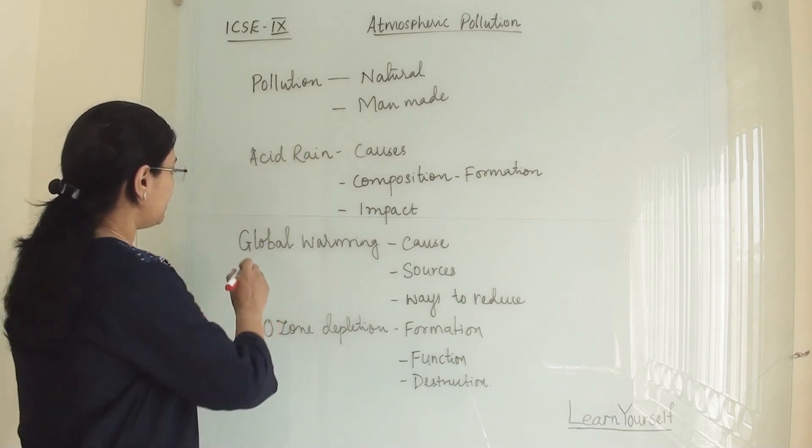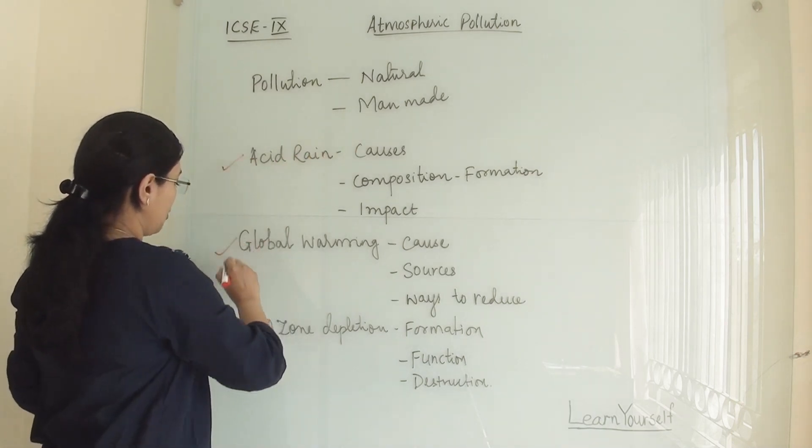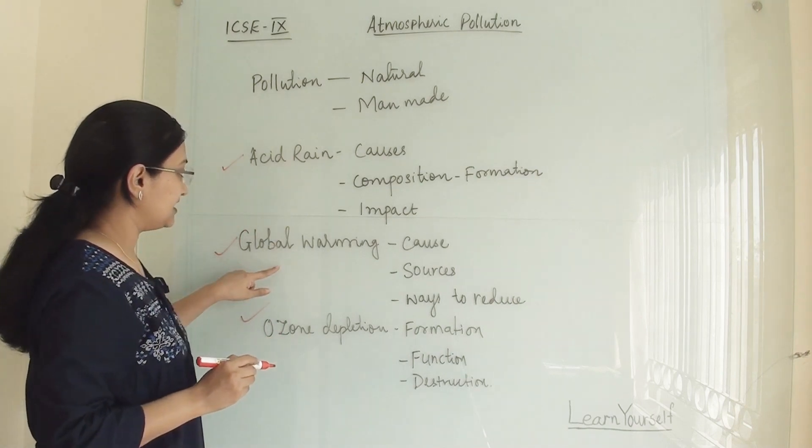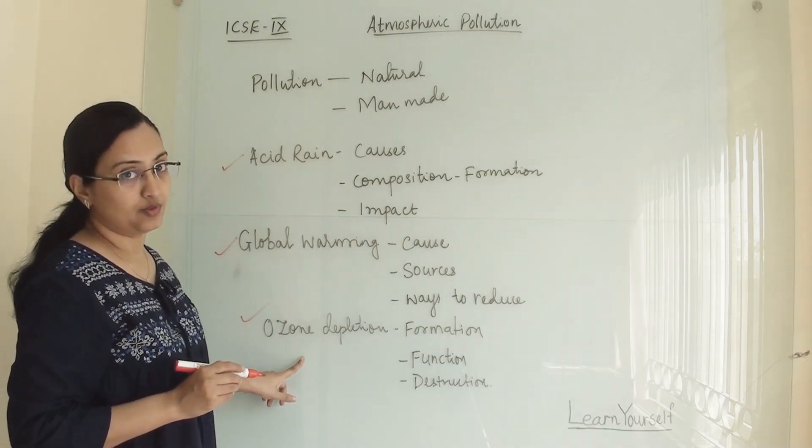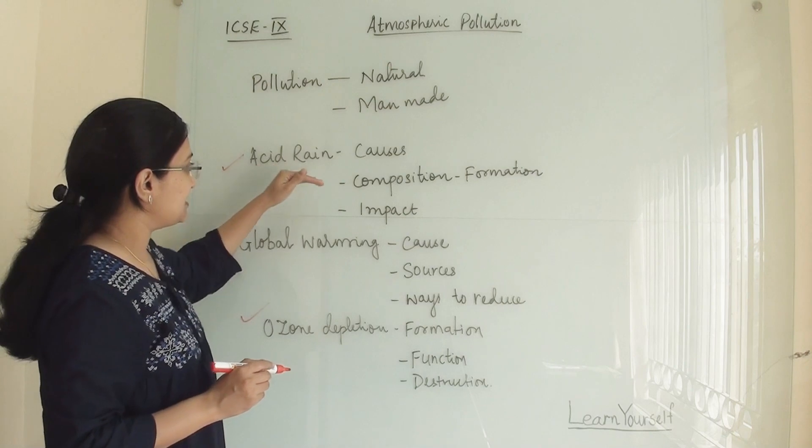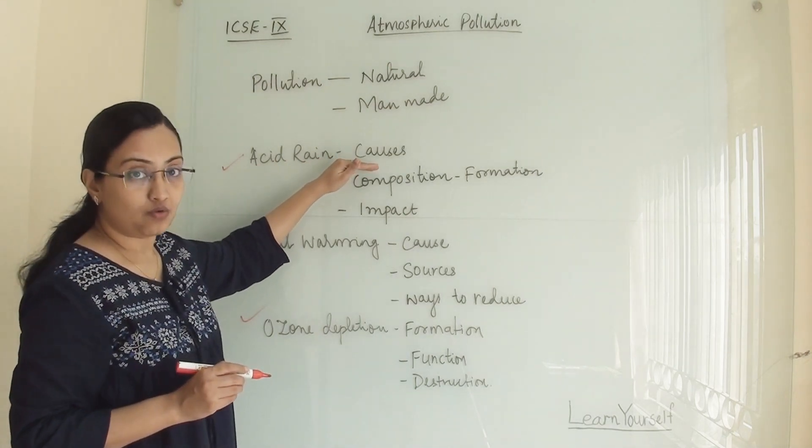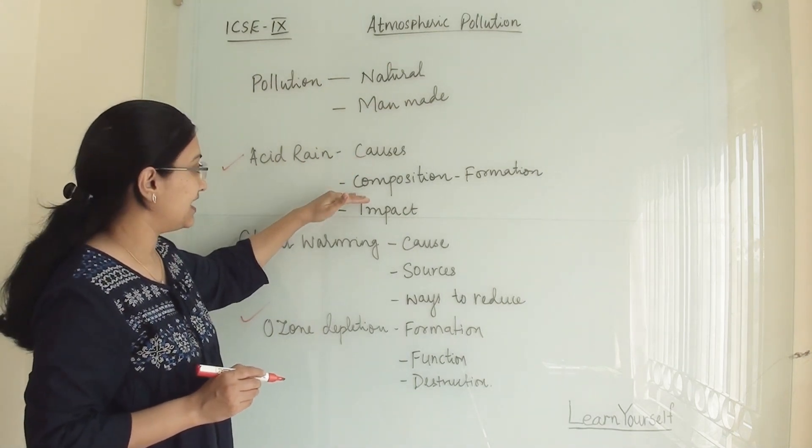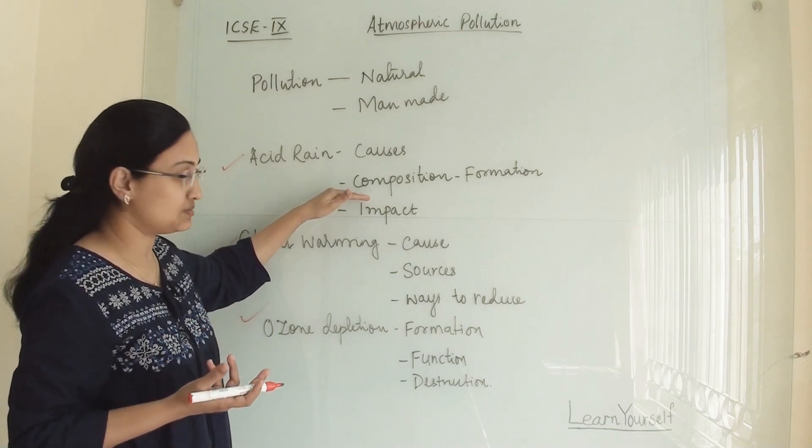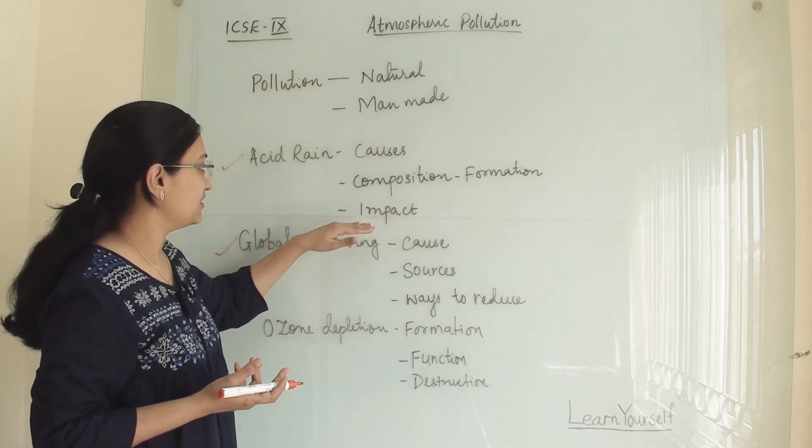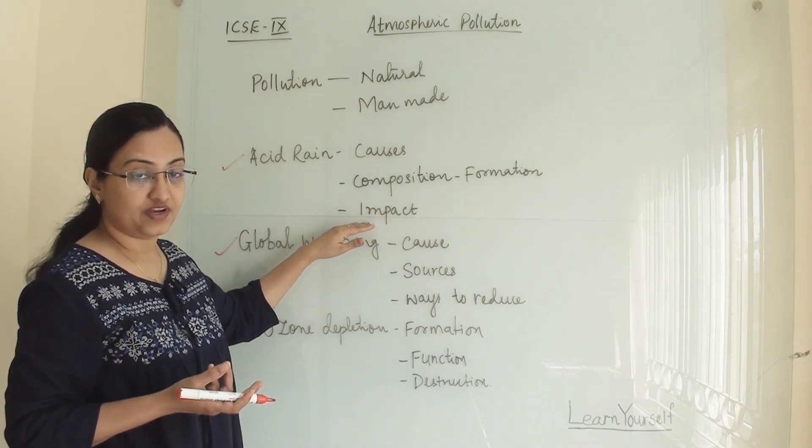We are going to study three main topics. First is acid rain, then global warming, and ozone depletion. In acid rain we will learn the causes of acid rain, then composition, how it is made, formation, and the impact of acid rain on the earth.